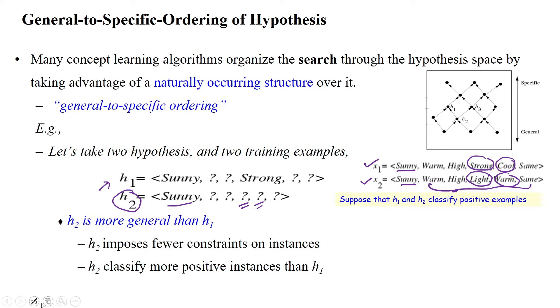h1 has strong in the fourth attribute. Due to that fourth attribute strong, it will not satisfy the second example. So h1 is classifying only the single example x1, but h2 is classifying x1 and x2.